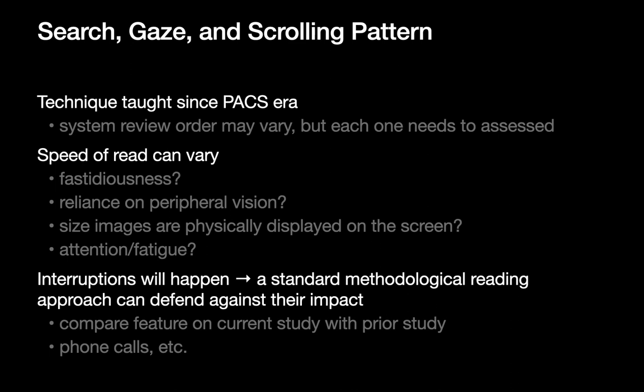And that's the way a chest CT can be read. Reviewing a chest CT by system is generally how most folks have been taught to read chest CTs since the PACS era began. The order in which we read various organ systems may differ from person to person, but the general concepts of what we look at and how we look at them are relatively consistent. There may be differences in how quickly folks review a chest CT, related to factors such as how much you rely on peripheral vision, how large you display the CT images, your level of fastidiousness, and your level of fatigue. Having a standard approach to reading a chest CT is extremely helpful in minimizing the impact of interruptions on your read.